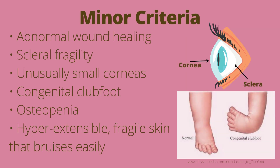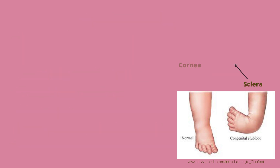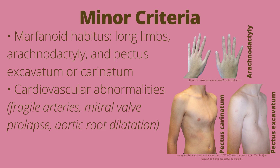Minor criteria include abnormal wound healing, scleral fragility, unusually small corneas, congenital clubfoot, osteopenia which is low bone density, and hyperextensible fragile skin that bruises easily. The sclera is the part of the eye that is white and the cornea is the outer layer of the eye.